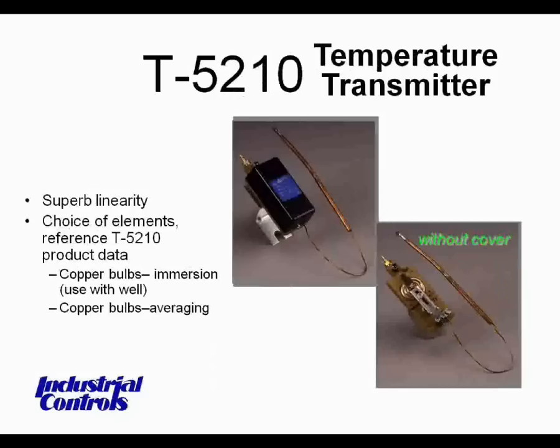Two things: looking at the picture without the cover, the round circle that looks almost like a silver dollar made out of brass — that's the temperature-sensitive element. That represents a bellows that expands and contracts, much like a bimetal, but it's not a bimetal. Averaging elements, as discussed, can be up to 20 feet long, and are meant to be spread across a coil or ductwork to allow for stratification.